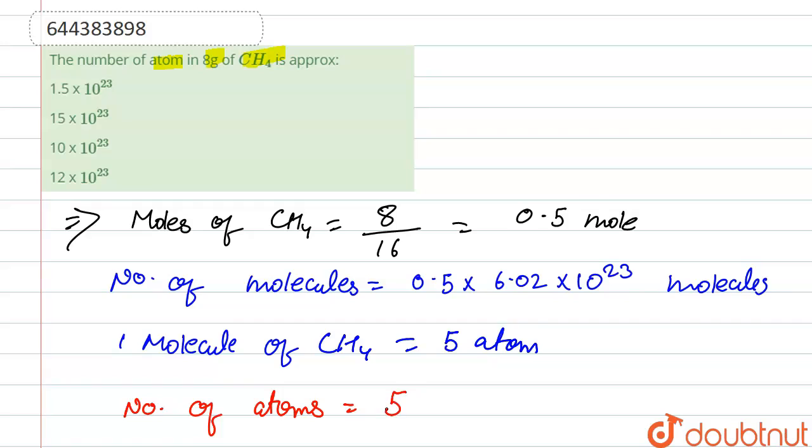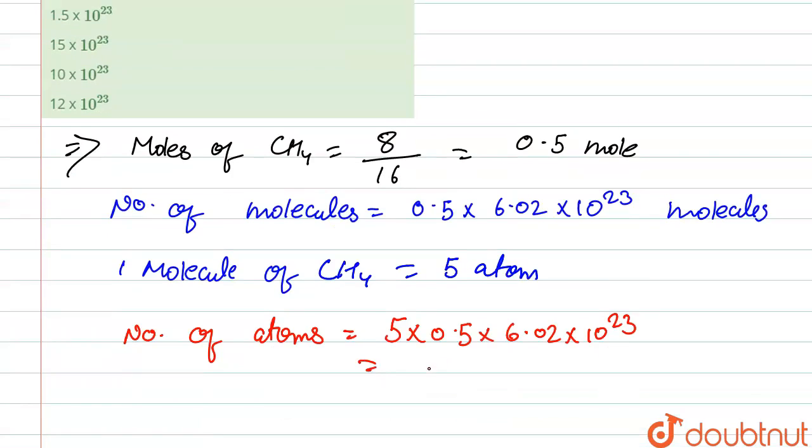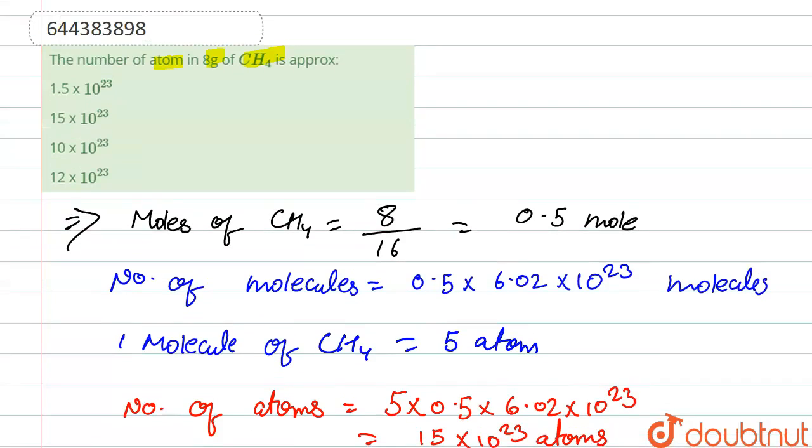Number of atoms: that is 5 into 0.5 into 6.02 into 10 to the power 23. So after solving this we get the total of 15 into 10 to the power 23 atoms.